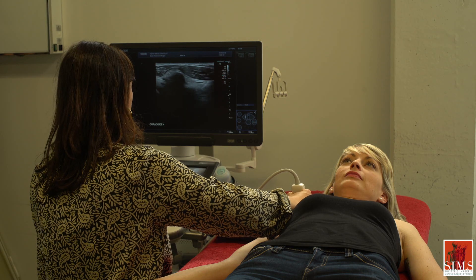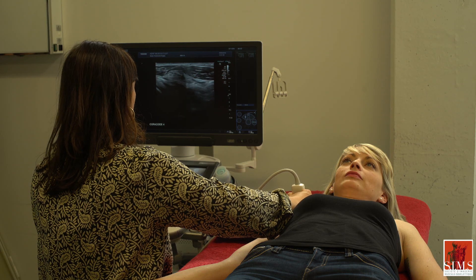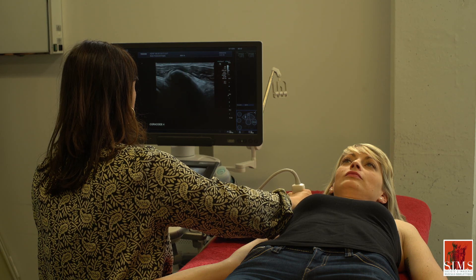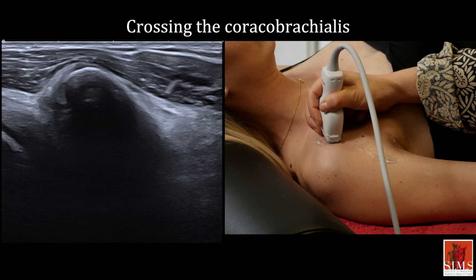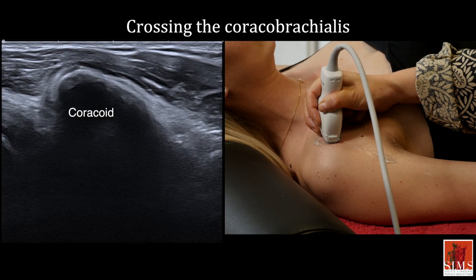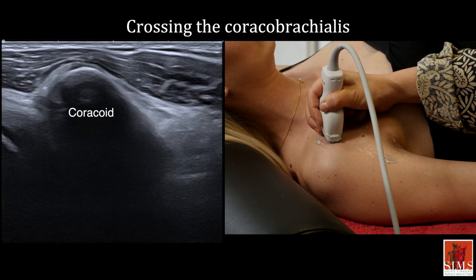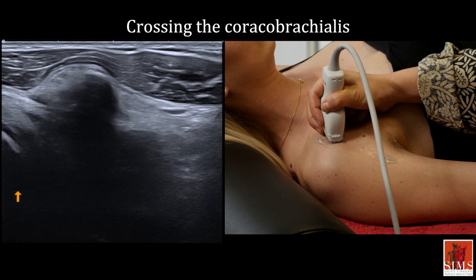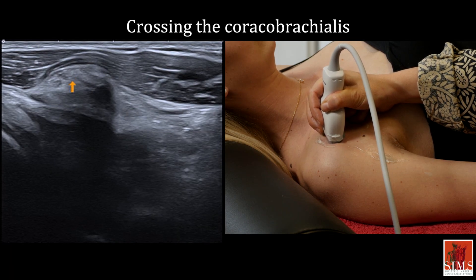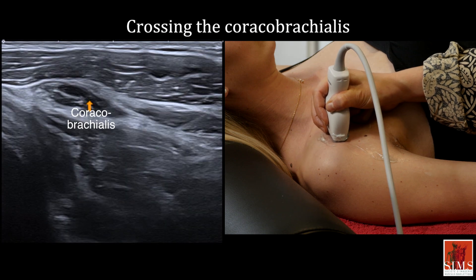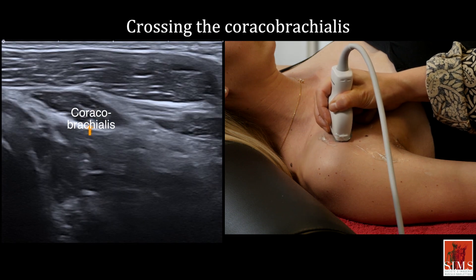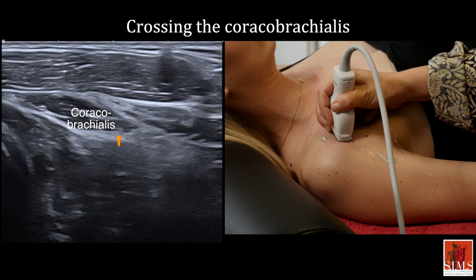The musculocutaneous nerve can be viewed on ultrasound, starting from the point where it exits the axilla. For this, I suggest locating the coracoid process and the proximal insertion of the coracobrachialis.